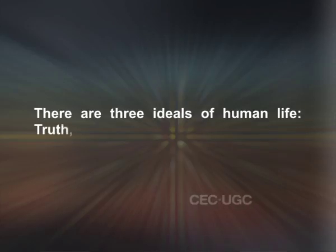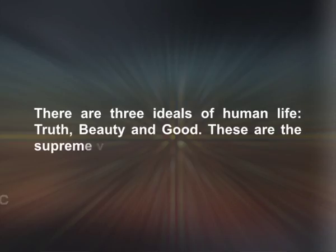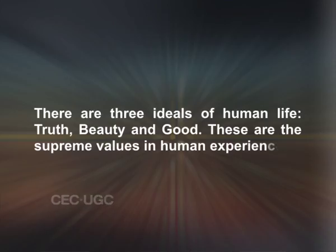Positive sciences concern facts or events and investigate certain uniformities or laws which govern them. They describe the ways in which certain classes of objects are found to exist in nature. They have no direct reference to any end or ideal by reference to which facts are judged. On the other hand, normative science seeks to determine norms, ideals or standards. There are three ideals of human life: truth, beauty and good. These are the supreme values in human experience. They correspond to the three aspects of our conscious life: knowing, feeling and willing.